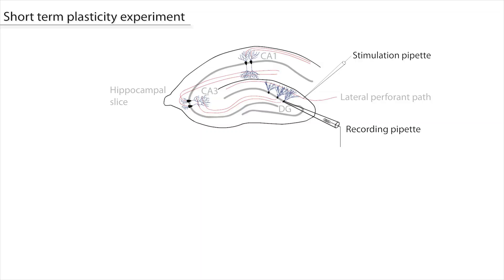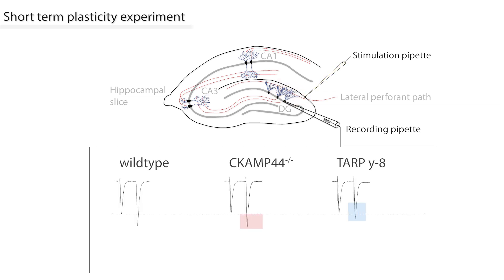So we stimulated perforant path fibers five times at a frequency of 20 Hz and recorded AMPA receptor-mediated currents. Indeed, as you can see from these example recordings from the three different genotypes we used,